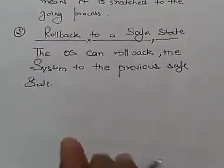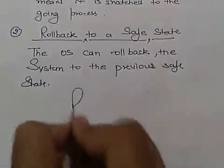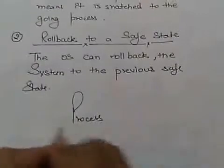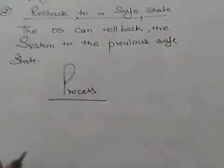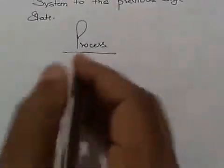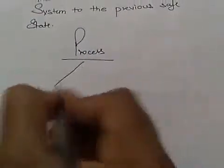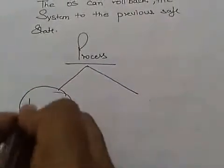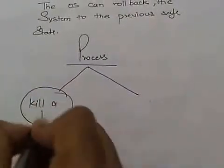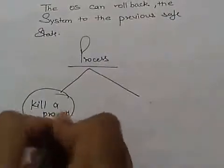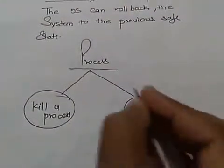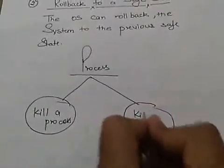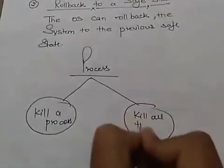For process, there are two. To recover a process, the operating system uses two mechanisms. One is to kill a process. And the another one is to kill all the processes.